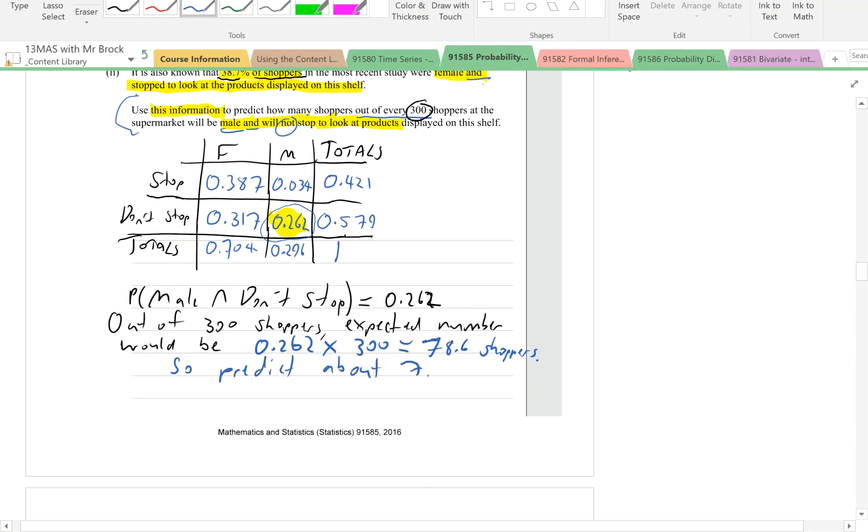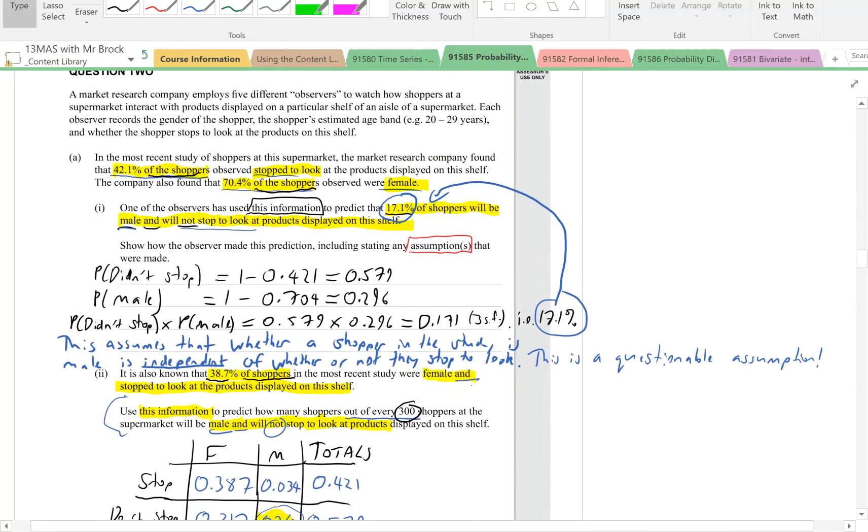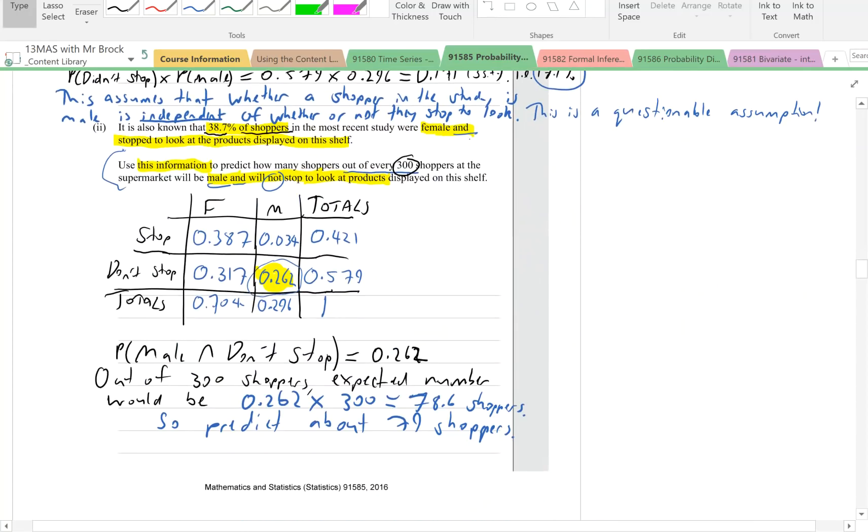Why is it only an estimate? Well, it's only an estimate because what we're doing is we're using data from a sample, from a survey, because it says here a recent study, and we're trying to extend that to shoppers in general, just any 300 shoppers. There's going to be other factors that may affect those shoppers as well. It will depend on time of day, time of week, time of year. It will depend on where the shop is and the demographics in that area. It's going to depend on lots of things. So it's just an estimate. That's why we would say predict about 79 shoppers.